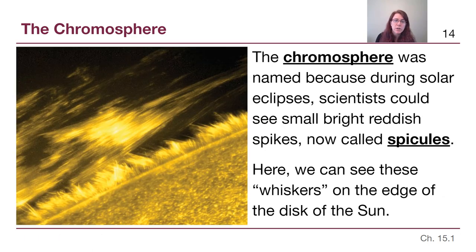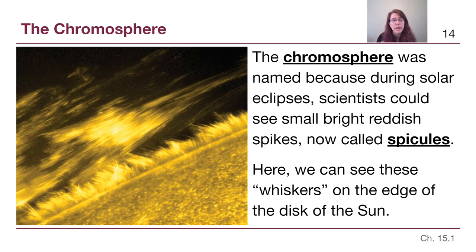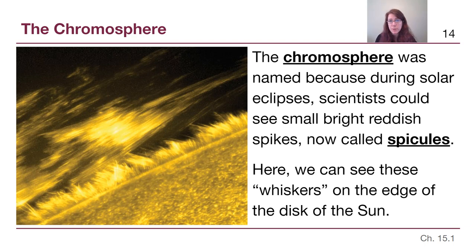Although the chromosphere and corona can be seen in visible light during a solar eclipse, that is not normally the type of light we investigate them with. The chromosphere is normally studied in near-ultraviolet — things just outside of visible light — to see the very hot material there. It was named because of those solar eclipses and looks pinkish-red in pictures due to specific wavelengths produced by little spikes called spicules, which you can see as whiskers off the edge of the sun's disk.